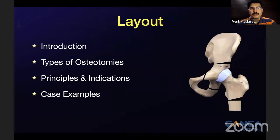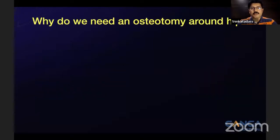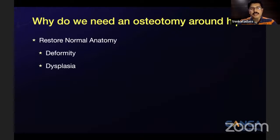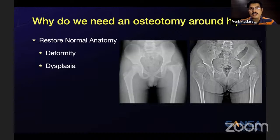This will be the layout of this lecture. I'm going to give a brief introduction on why we need osteotomies around the hip and various types of femoral osteotomies — the basic principles and indications. The first indication is to restore normal anatomy. You can have a deformity around the hip, like coxa vara where the neck shaft angle is decreased, and you may need an osteotomy to correct it. The second indication is dysplasia, where there is coxa vara as well as acetabular dysplasia.